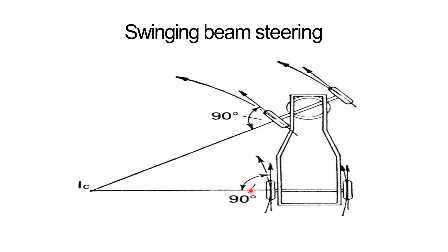Each wheel gives a 90-degree angle to its respective radial line from IC. It can be observed from the figure that all the wheels are at right angles to radial lines drawn from point IC, and each wheel is tangent to the curved path that the wheel is actually taking. There is the natural tendency of wheels to travel in a straight path. That concludes the swinging beam steering system.